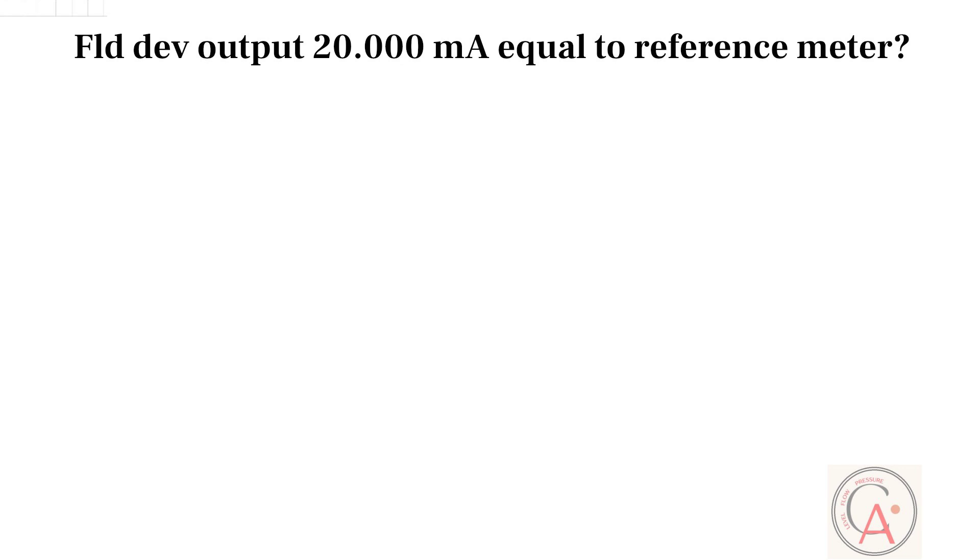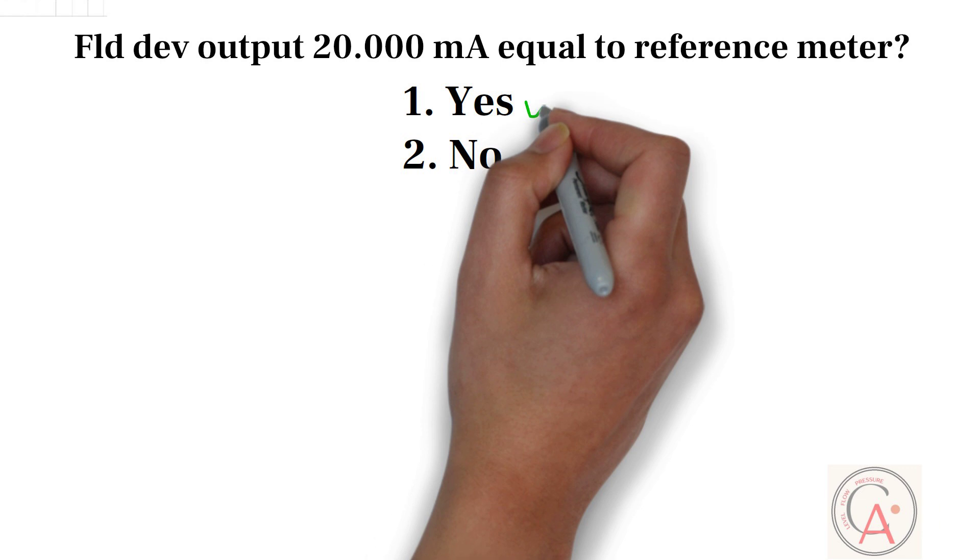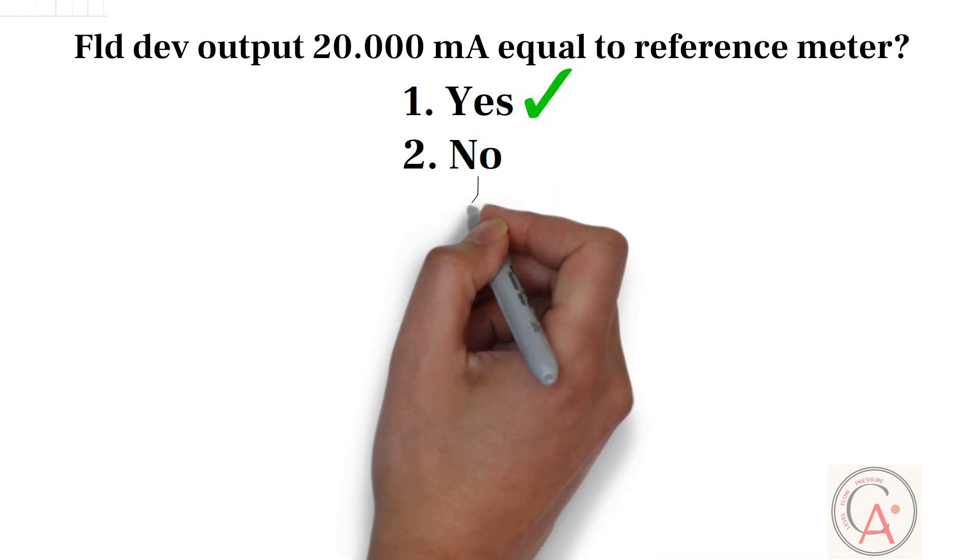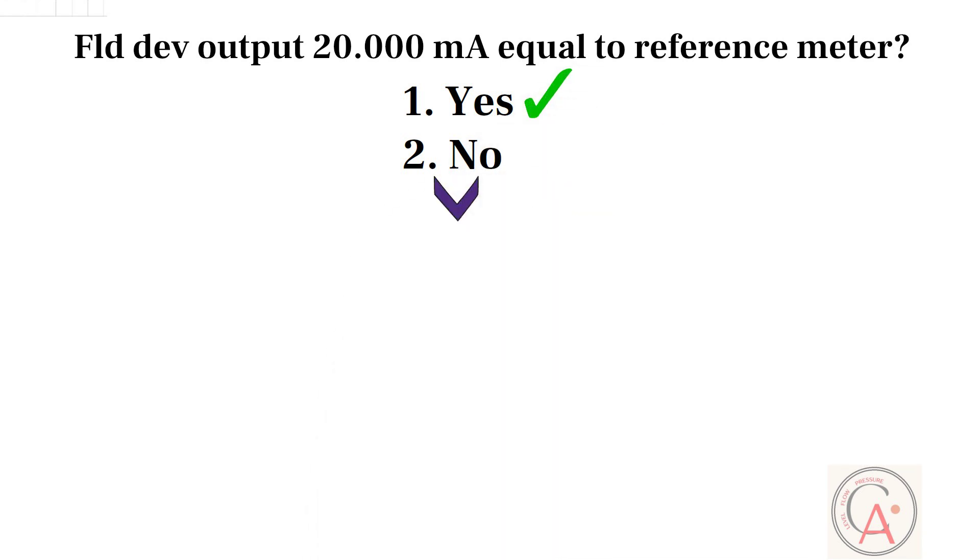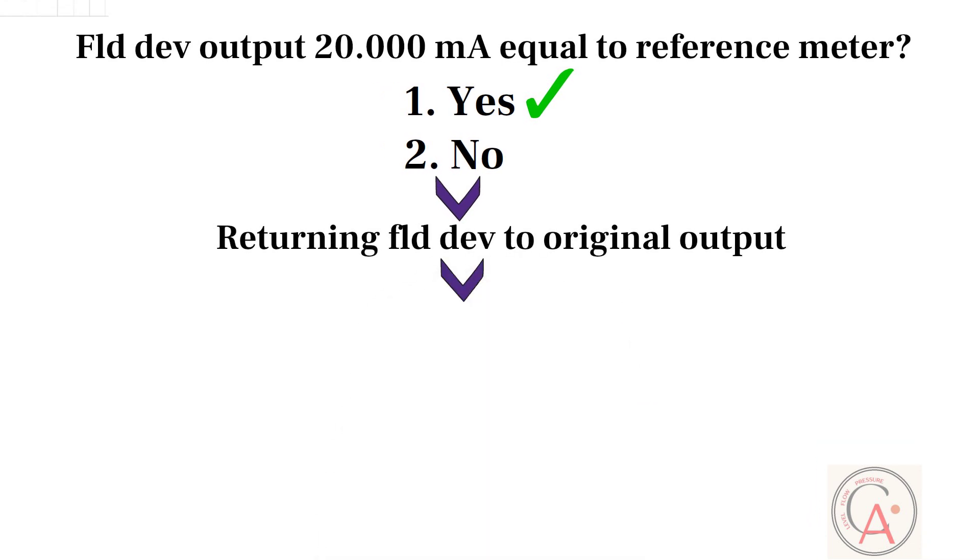Field device output 20 milliampere equal to reference meter message will appear on the screen. Select YES option and press ENTER button. After this, returning field device to original output message appears on the screen. Press ENTER button at this time. Then loop may be returned to automatic control message appears on the screen. At this time, press ENTER button to put loop into automatic control.